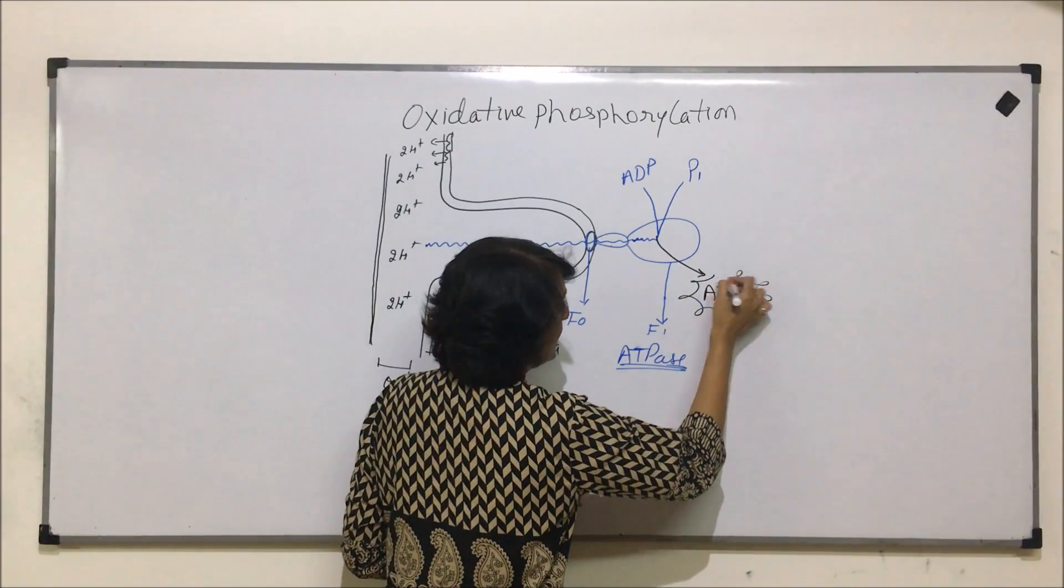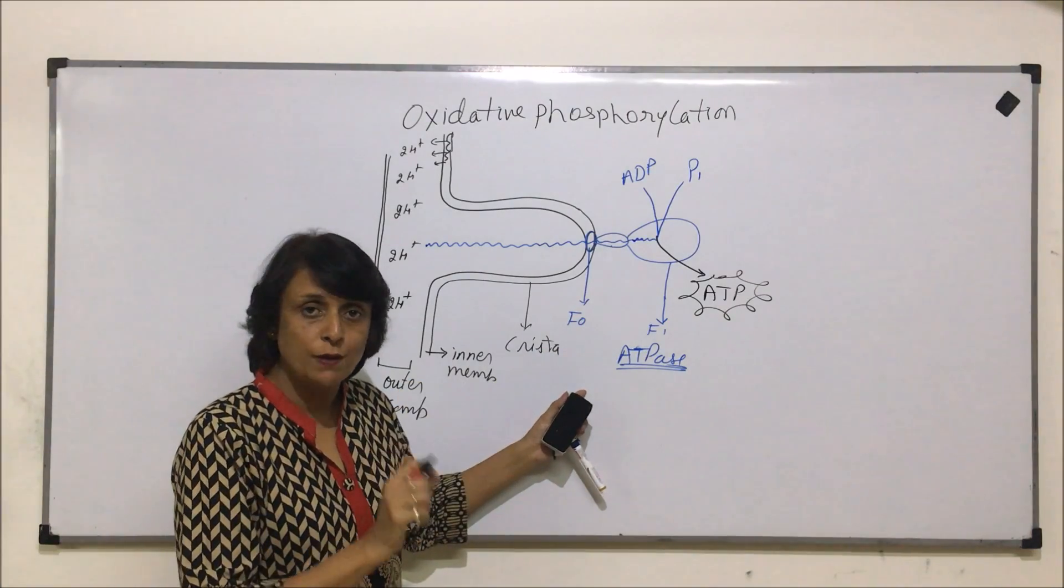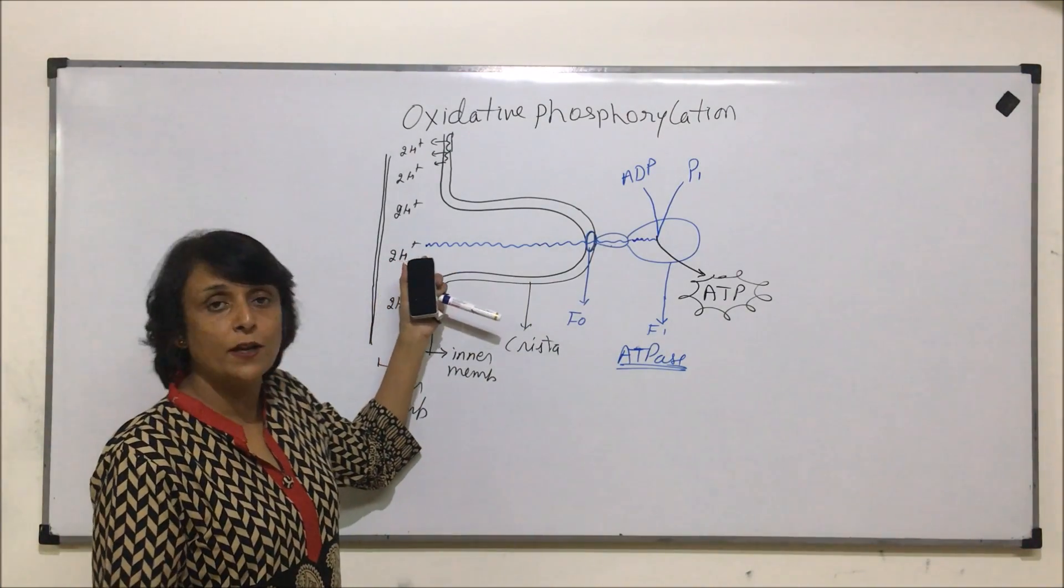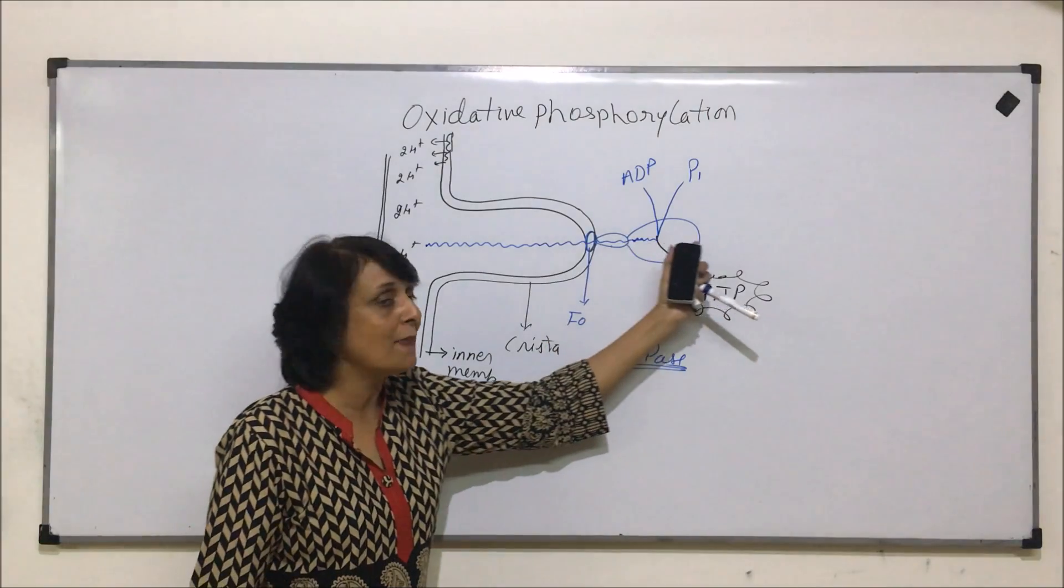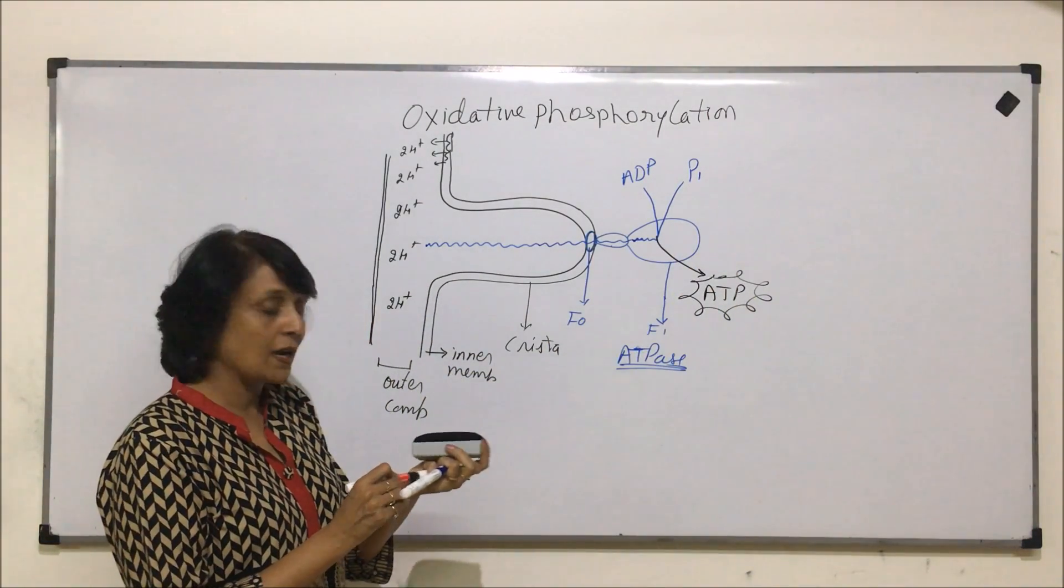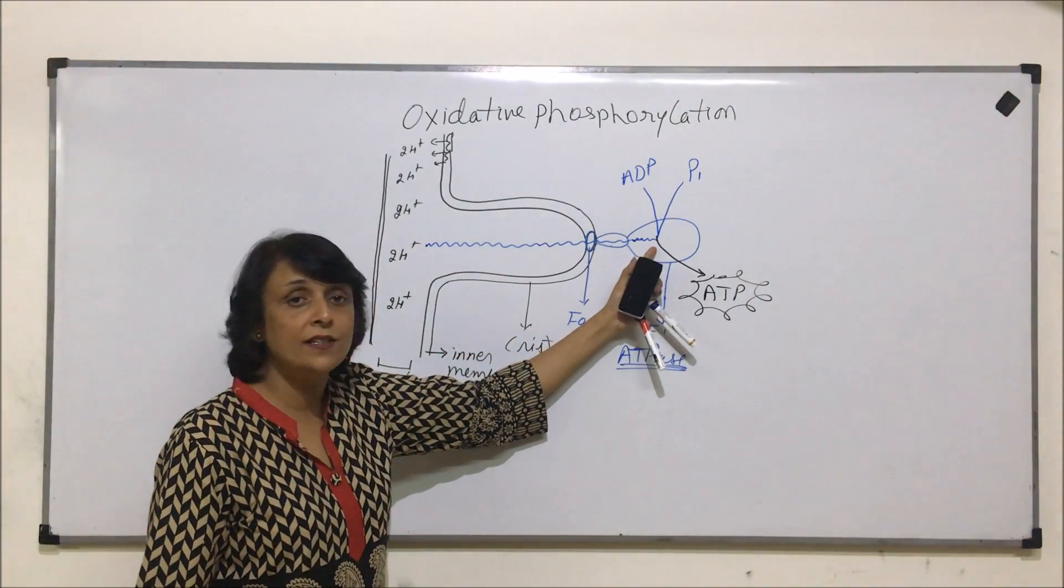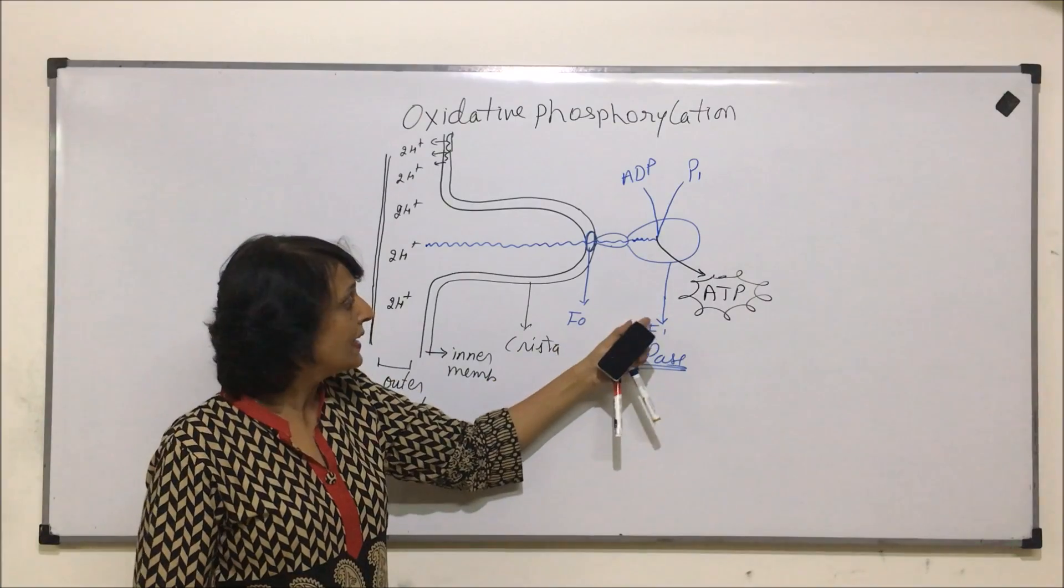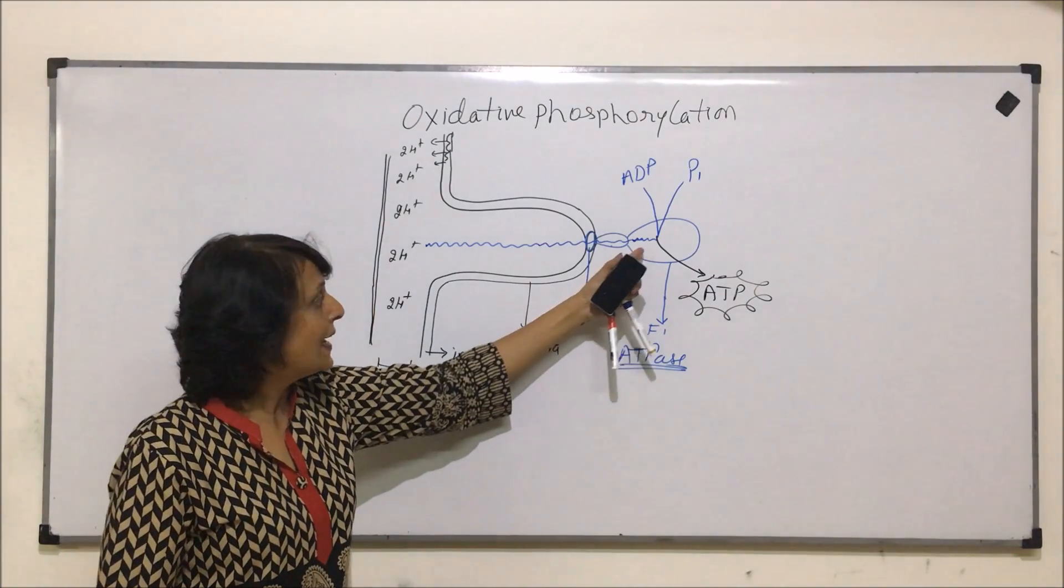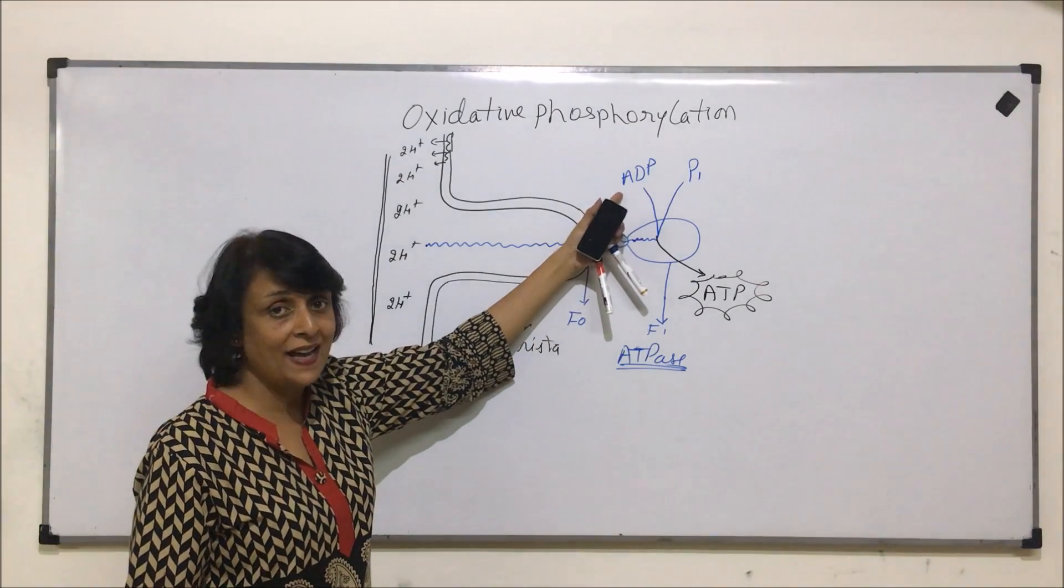That means the energy is synthesized. Let me just go over it one more time quickly. Similarly, the pair of protons can come back only through F0, F1 particle. When it is coming back, it is bringing some energy. That energy is released at F1 particle. That energy is utilized to combine ADP, diphosphate,